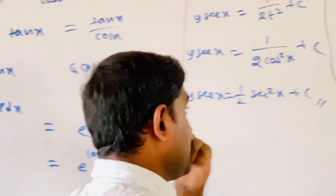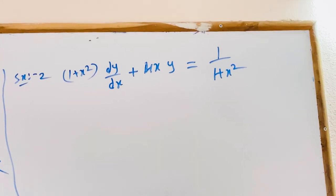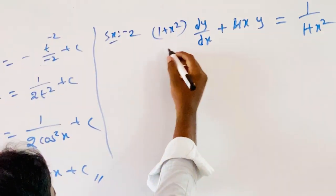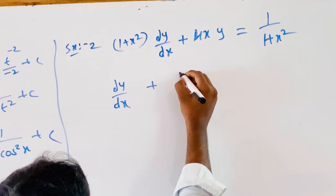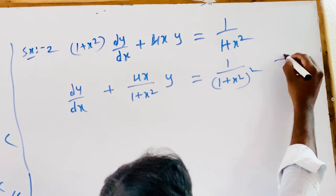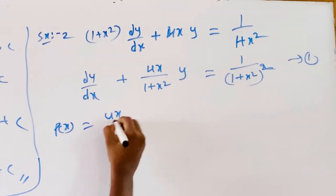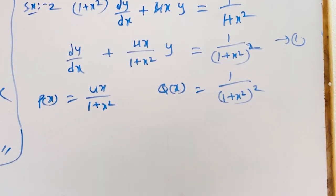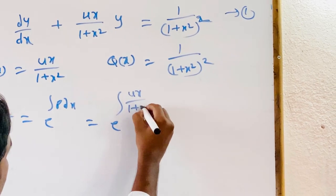Example 2: (1 + x²)·dy/dx + 4x·y = 1/(1 + x²). This is not in standard form, so we divide the entire equation by (1 + x²) on both sides. We get: dy/dx + [4x/(1 + x²)]·y = 1/(1 + x²)². Here p(x) = 4x/(1 + x²) and q(x) = 1/(1 + x²)². Finding the integrating factor: IF = e^(∫4x/(1 + x²) dx).